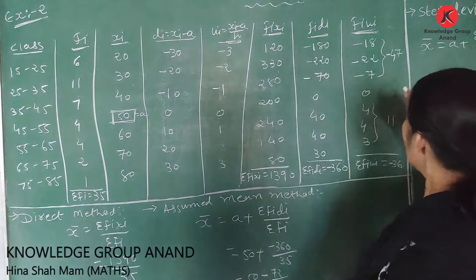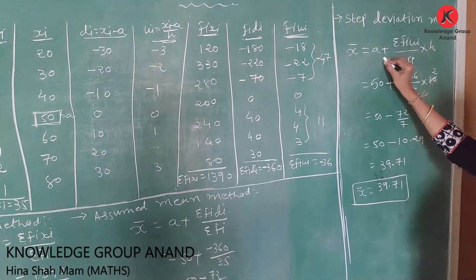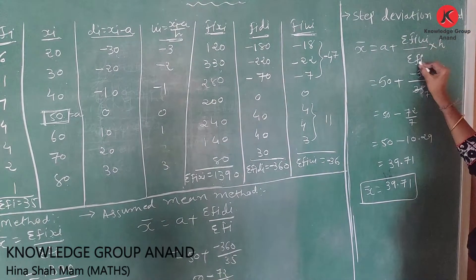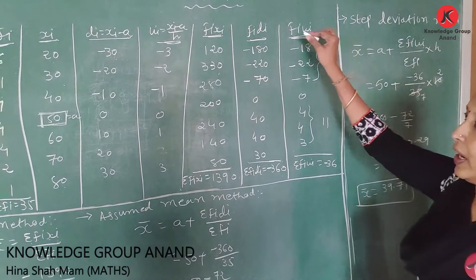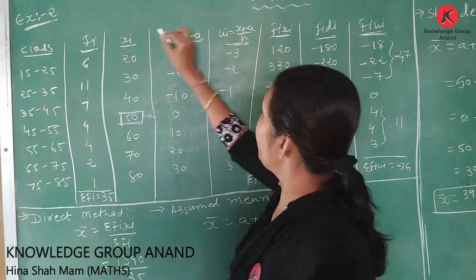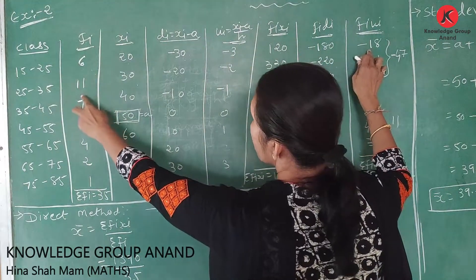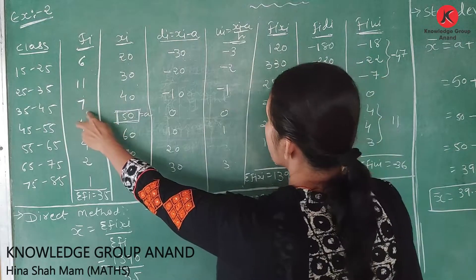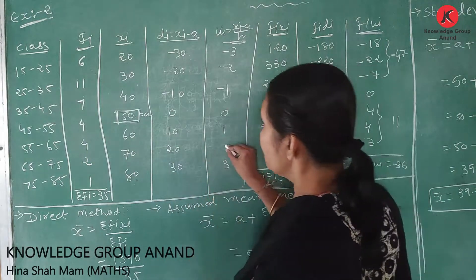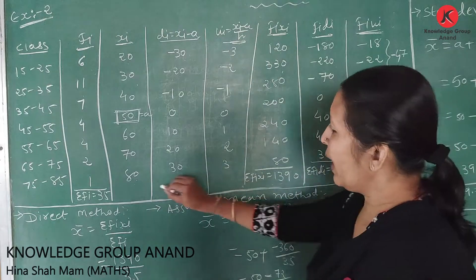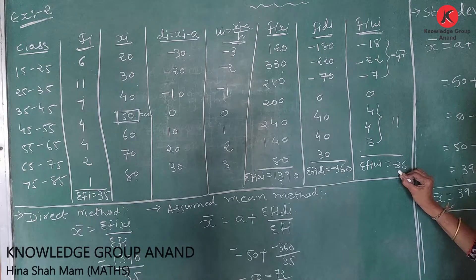For the step deviation method, the formula is x̄ = a + (Σfi·ui / Σfi) × h. We find fi × ui: 6 × (-3) = -18, 11 × (-2) = -22, 7 × (-1) = -7, 4 × 0 = 0, 4 × 1 = 4, 2 × 2 = 4, 3 × 3 = 9 (adjusted). Σfi·ui = -36.